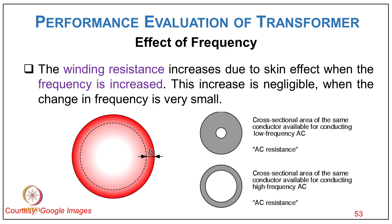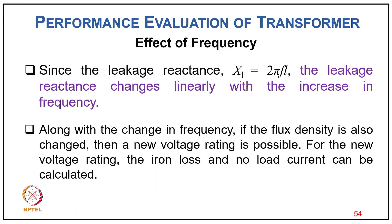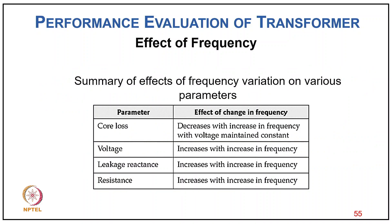Winding resistance increases due to skin effect when frequency increases, though this increase is negligible for small frequency changes. As frequency increases, AC resistance exceeds DC resistance because AC current tends to flow on the outer surface of the conductor, reducing the effective cross-section. Since leakage reactance XL = 2πfL, leakage reactance changes linearly with frequency. Summary: with increasing frequency at constant voltage — hysteresis loss decreases; eddy current loss remains constant; voltage increases; leakage reactance increases; resistance increases.